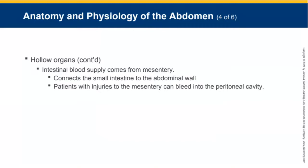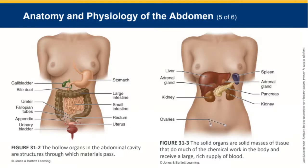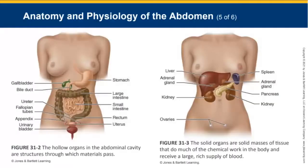The intestine receives its blood supply from the mesentery, which connects the small intestine to the abdominal wall. Patients with injury to the mesentery can bleed into the peritoneal cavity. While this blood is not as acidic and irritating as the contents of hollow organs, it can still cause irritation. Know your quadrants and recognize where bruising or pain is located to maintain that index of suspicion.